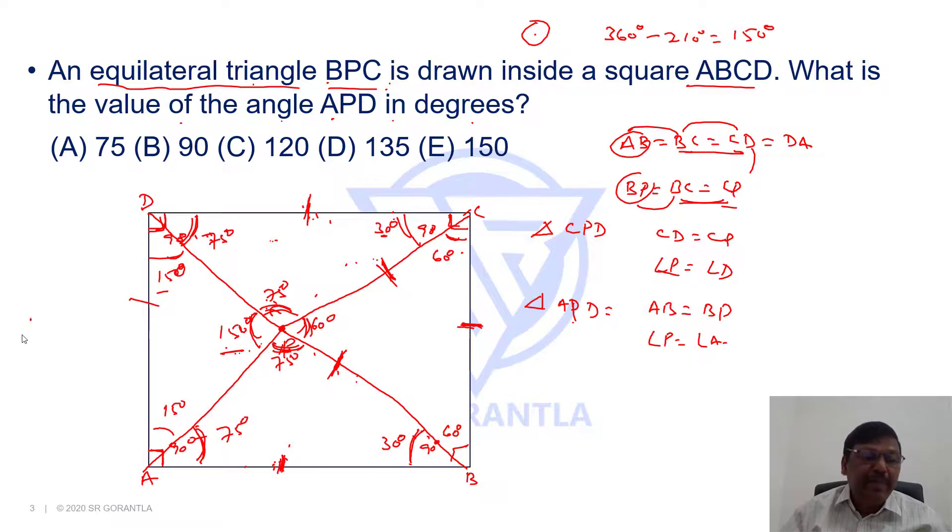So angle APD has to be 150 degrees. This is another way of saying this. So our answer is choice E, 150 degrees. Here, all four sides are equal. All four angles are equal. In a square, all three sides are equal. Hence, all three angles are in an equilateral triangle. If you apply this, we get the answer easily. Thank you.